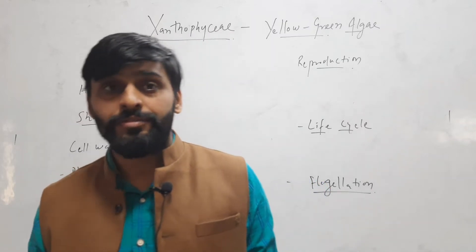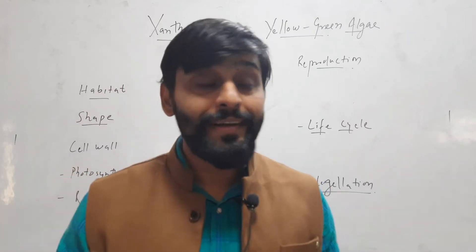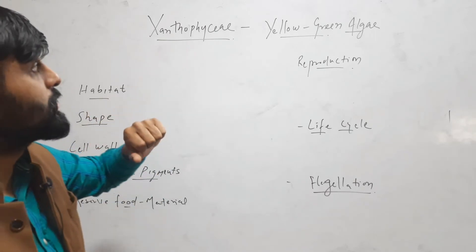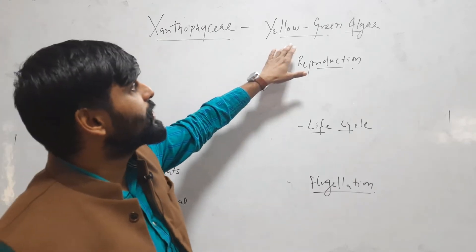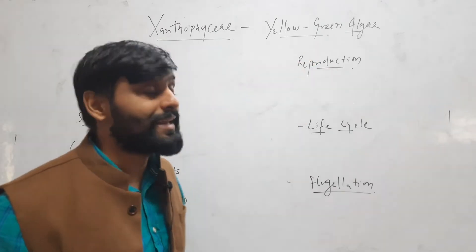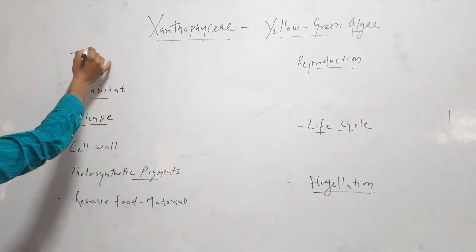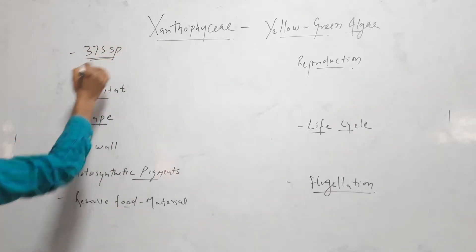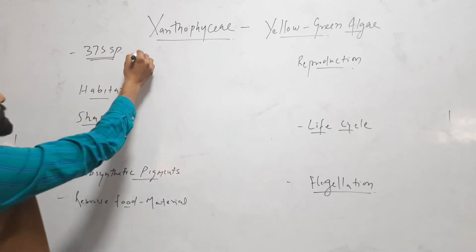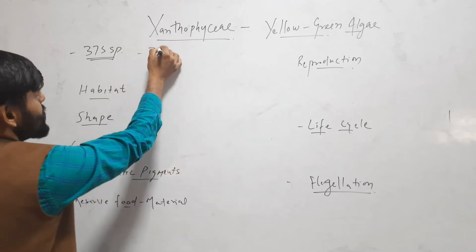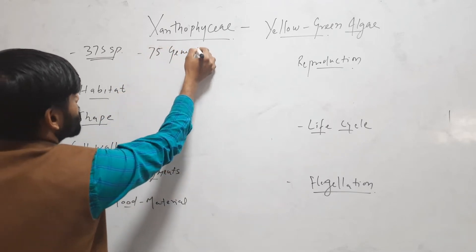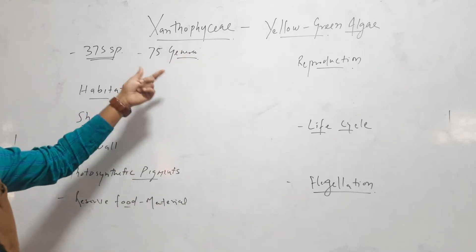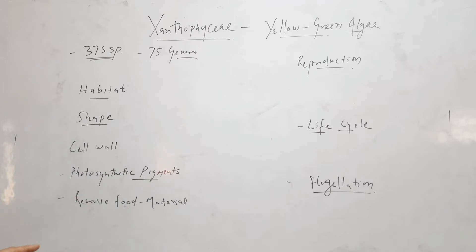Hello friends, in this video we will discuss the general character of Xanthophyceae. This Xanthophyceae is also called yellow-green algae. Overall, 375 species of Xanthophyceae are found across 75 genera, distributed across the globe.